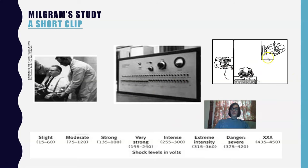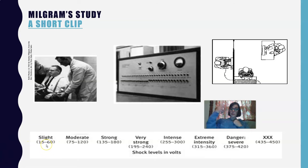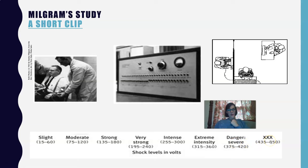You go back into the other room. The experimenter sits at a desk and you sit in front of an impressive shock machine with many switches. Every time the learner makes a mistake, you start with the 15-volt switch and increase by 15 volts each time. The shock levels on the generator are labeled: slight, moderate, strong, very strong, intense, extreme intensity, dangerous-severe, and the ominous triple X, going all the way up to 450 volts.